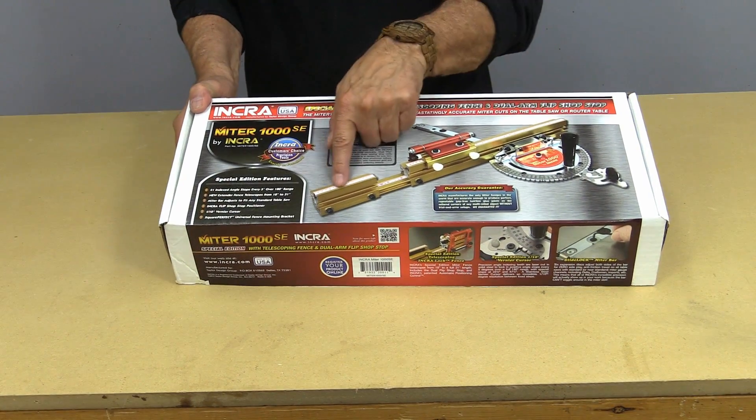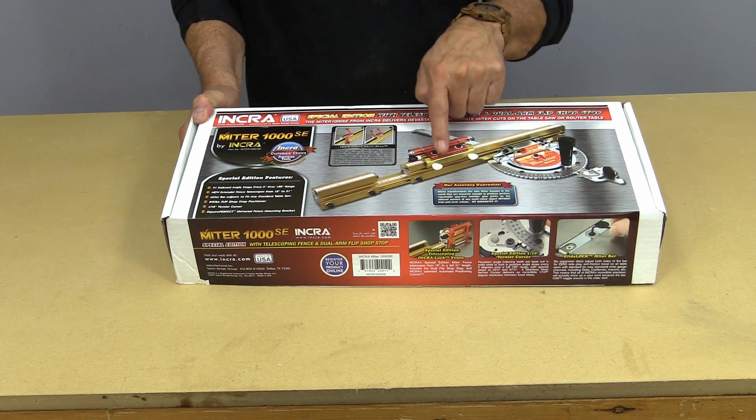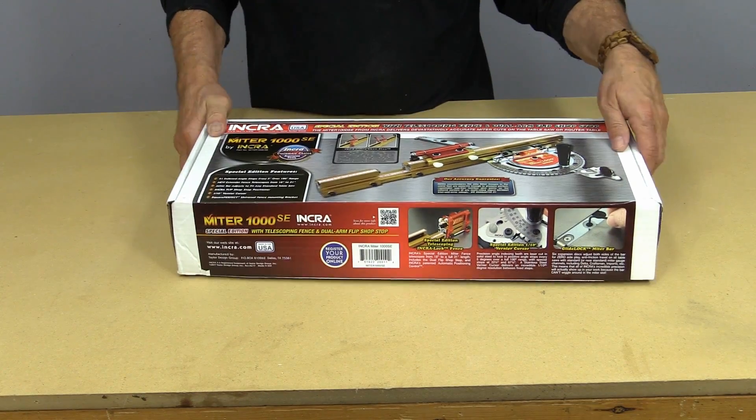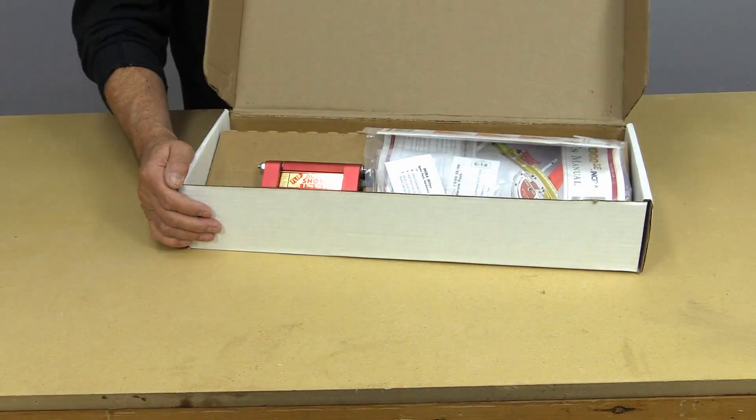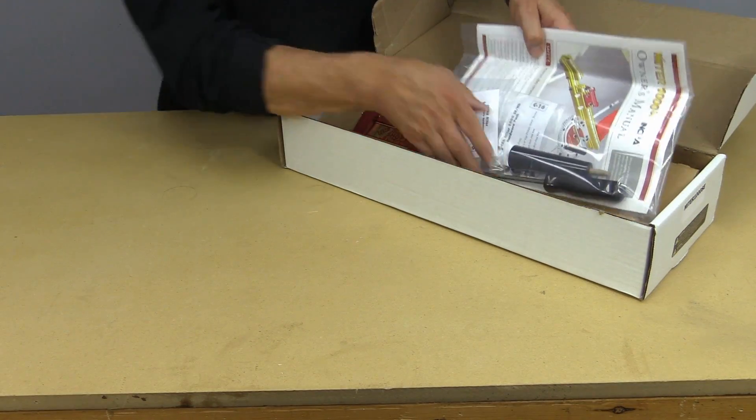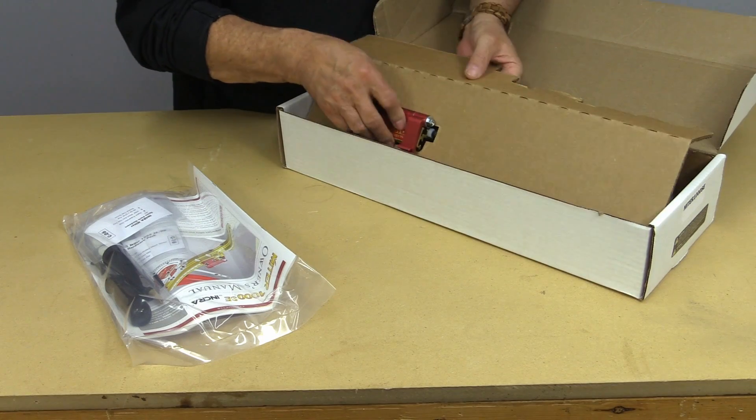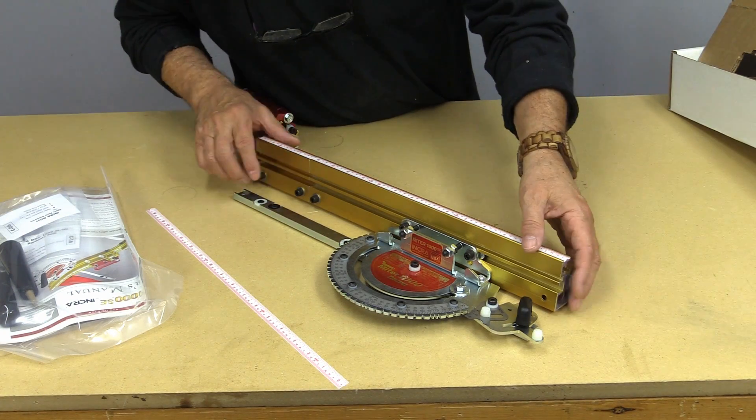Now one of the things that I liked about this version is it has this extended fence which I use quite often rather than just the plain miter gauge. So let's open it up. I expect there's some parts that we'll have to put together, but it looks like it's actually all together.